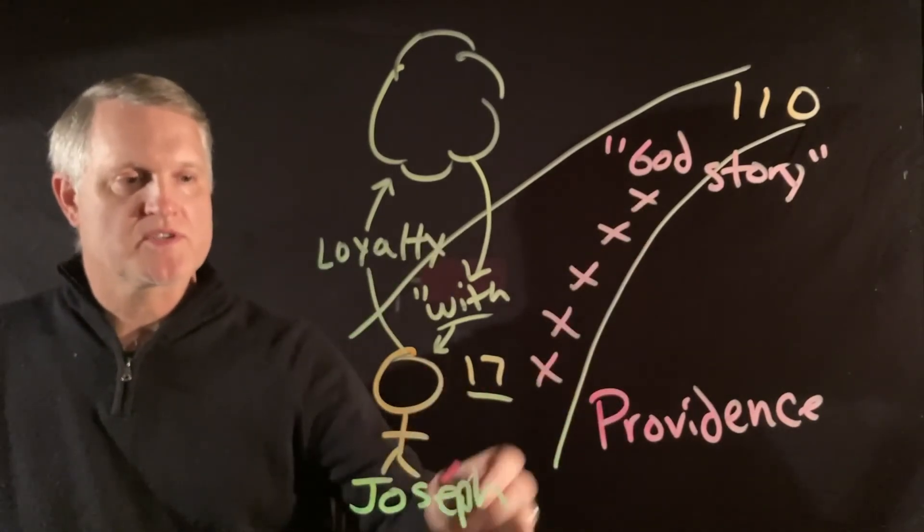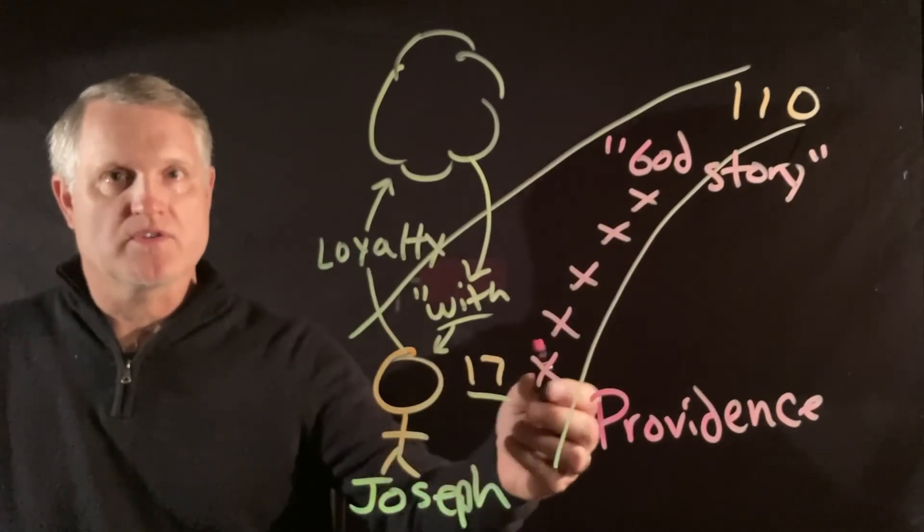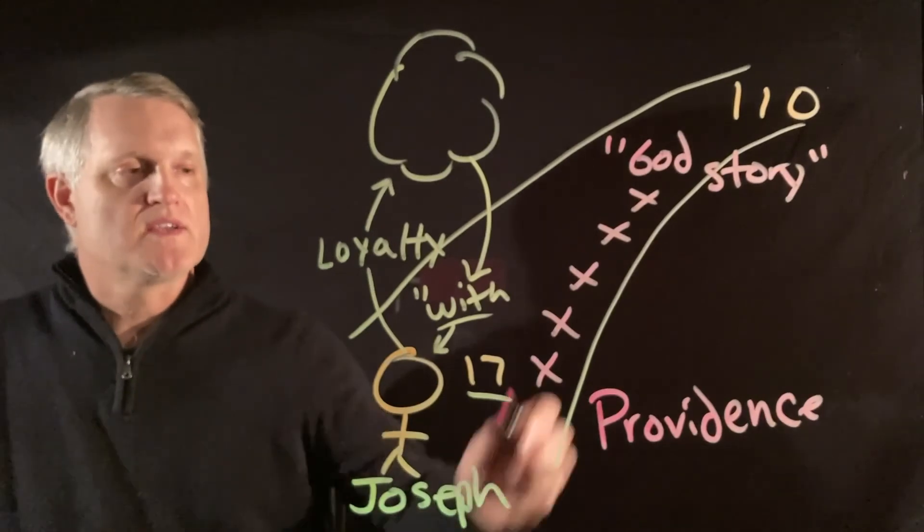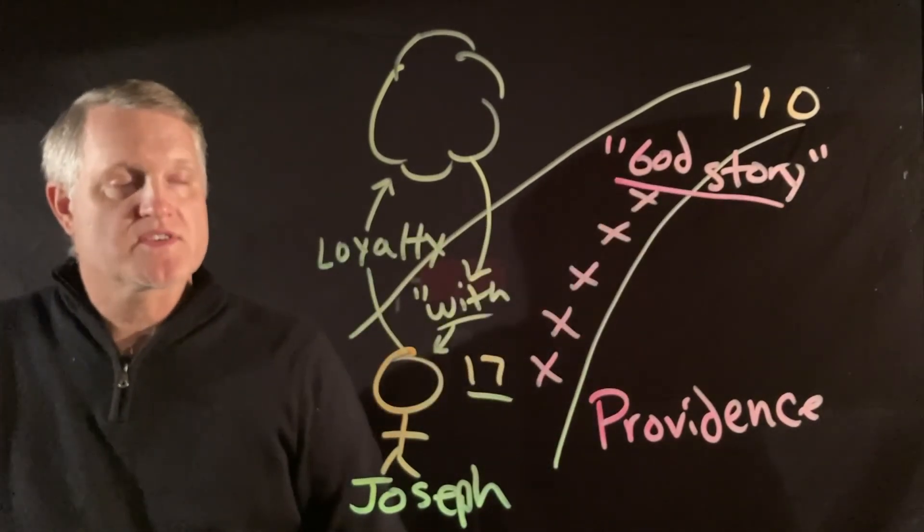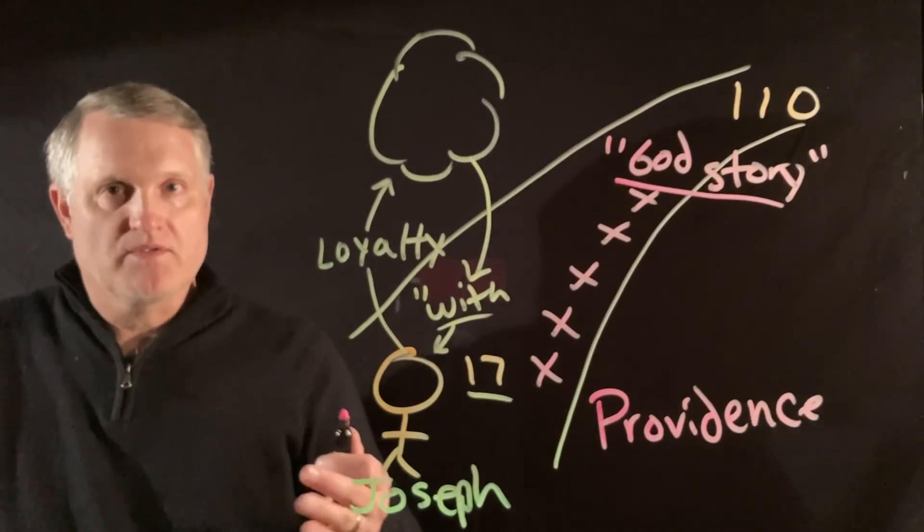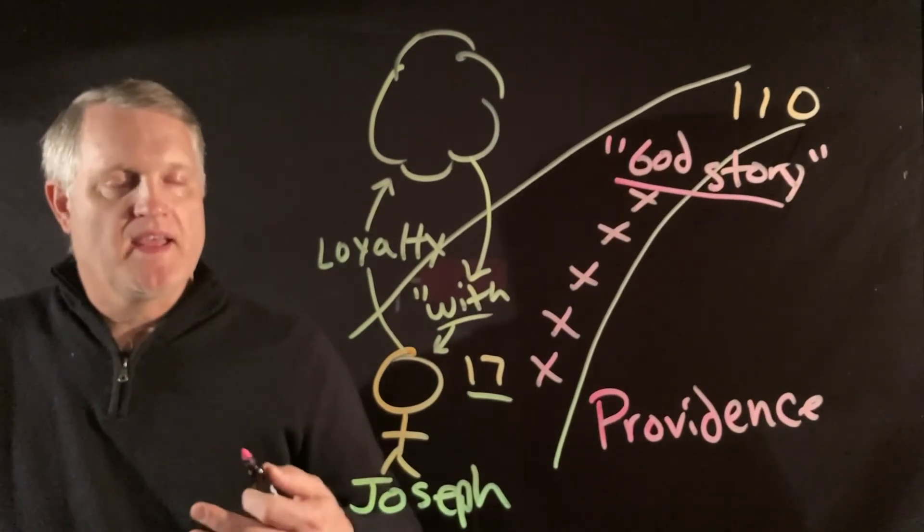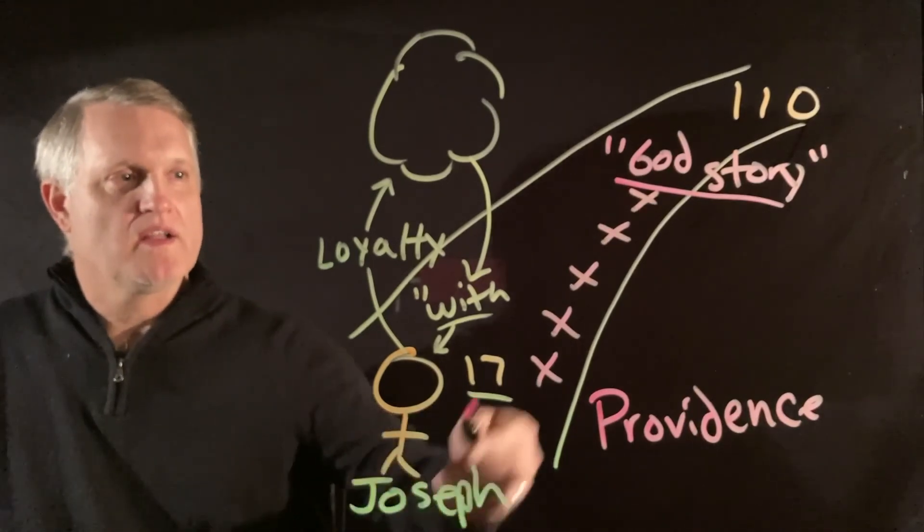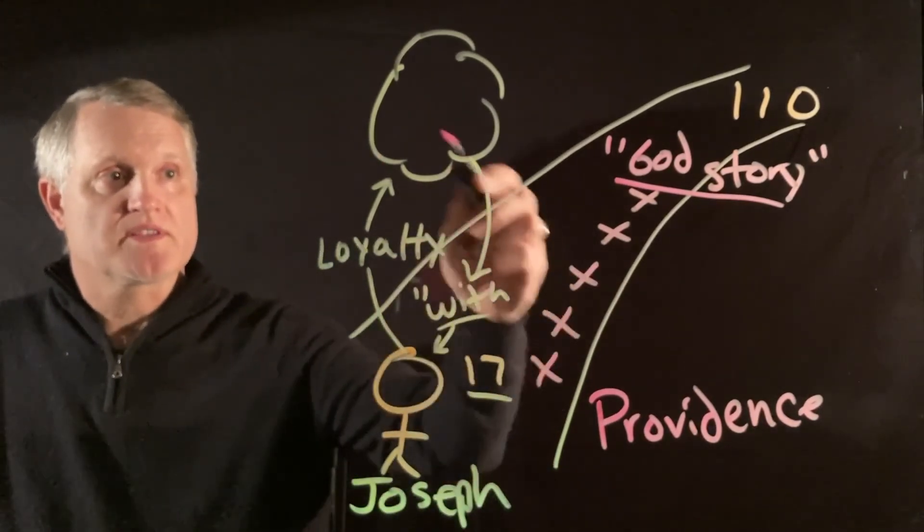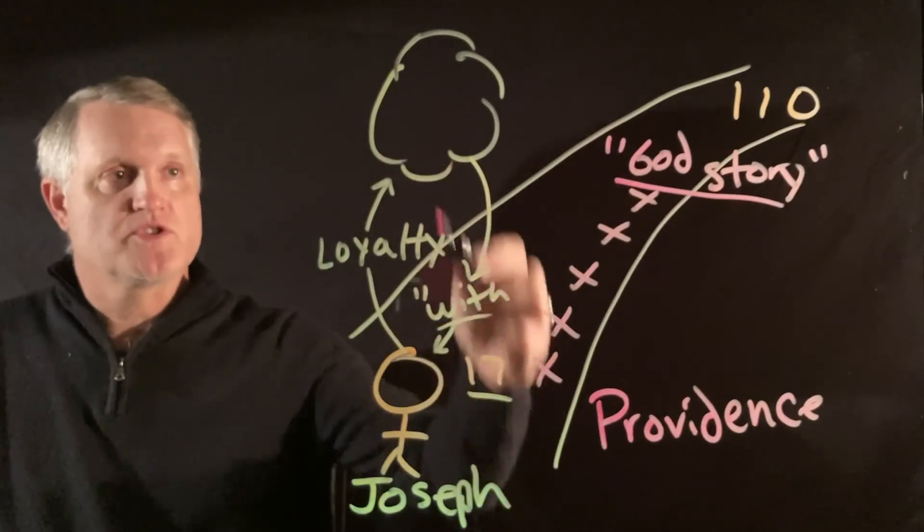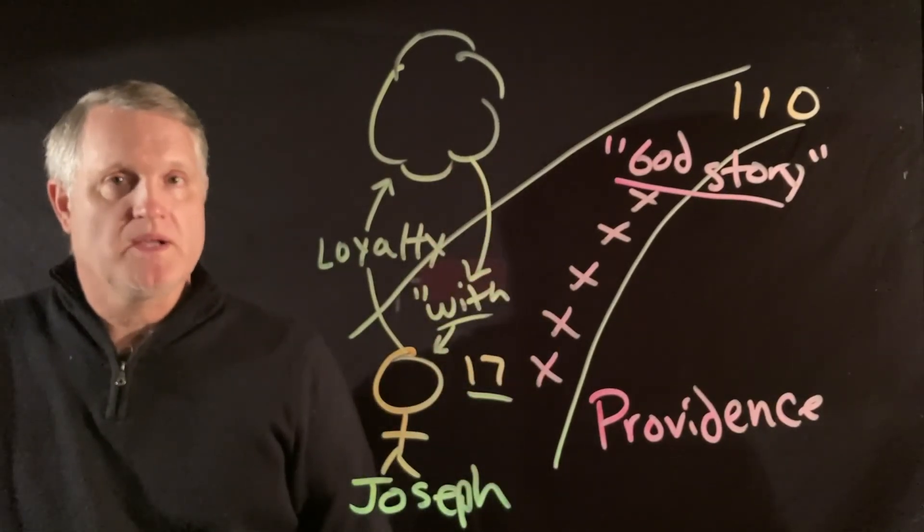How does a person like Joseph, who lives among brothers who are very cruel, still end up by the time the story is over, and let's watch how this goes, and be able to say, 'You meant it for evil, God meant it for good,' and have such a positive outlook on his own life? That all begins with this picture here again of Joseph choosing to be loyal to God and God being with him.